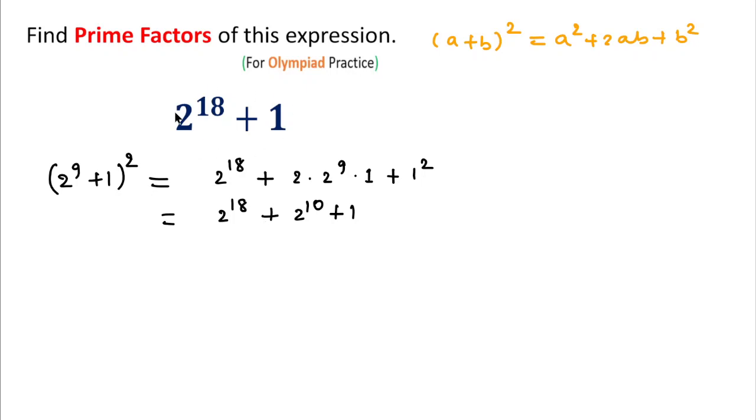In the original expression, we have 2^18 + 1, but here 2^10 is extra. So I am subtracting 2^10 from both sides. This will cancel out the extra term, and after that we can write...